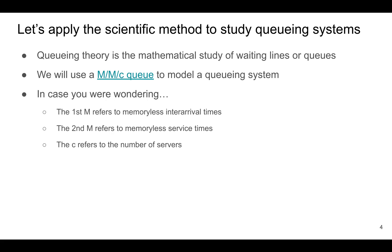While you could try to make a scheduling decision using your gut feel or experience, smart companies use the scientific method to help them make the right decision. So we'll be discussing today something called queuing theory, which is a branch of mathematics where people study waiting lines or queues.